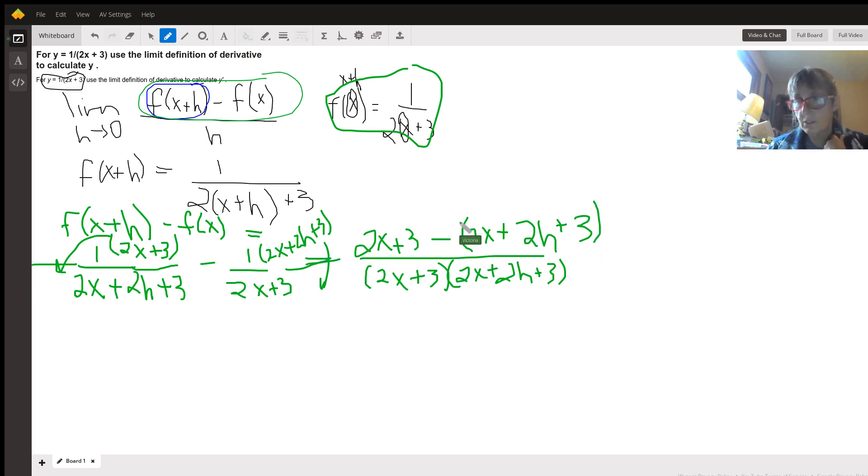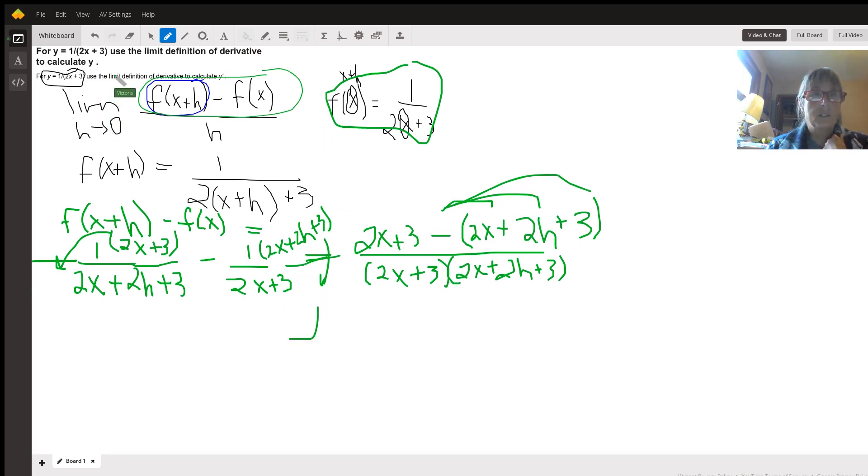So let's simplify this. I'm going to distribute the minus sign into all of these. And this is going to be 2x plus 3 minus 2x minus 2h minus 3. And notice that the 2x's cancel and the 3's cancel.